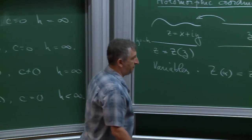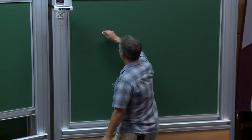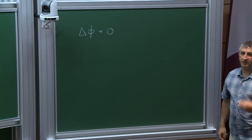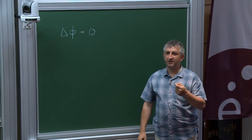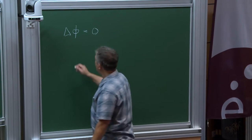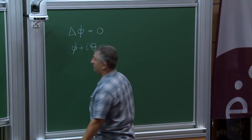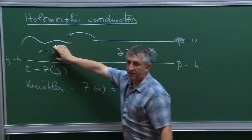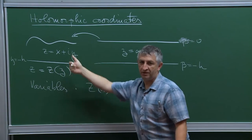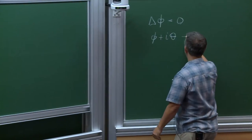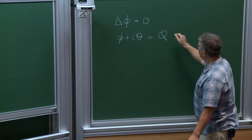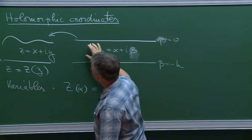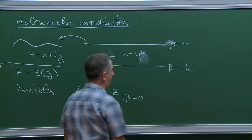Since the velocity potential phi satisfies the Laplace equation, it has a harmonic conjugate — which is exactly the stream function. So phi plus i theta is a holomorphic function in the fluid domain. Composing with the change of coordinates, I can think of this as a single holomorphic function of the variable zeta. I don't need all values of q in the strip — only q on the top determines what happens on the bottom.